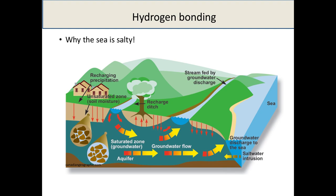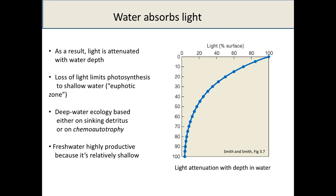Now moving on to two other characteristics of water. First: water absorbs light. This plot shows the percentage of light at the surface and how much remains as we go down through the depths, on a scale of 1 to 100 metres. Within the first 10 metres we've lost around 40% of the light. Within the first 20 metres we're down to less than 40%. Once we've reached 100 metres depth, there's practically no visible light remaining.